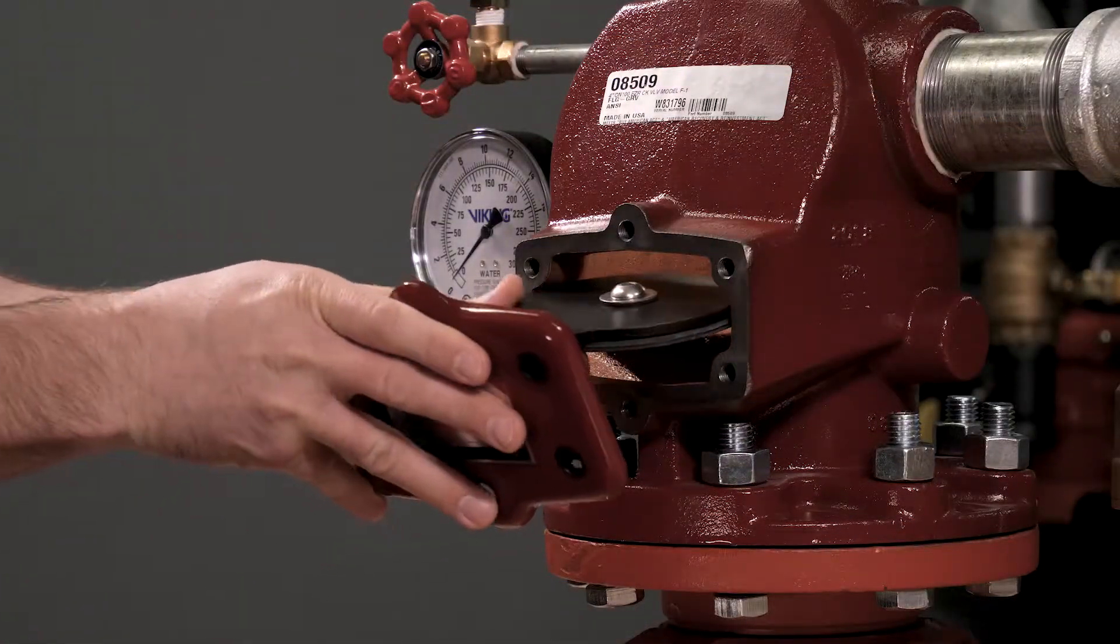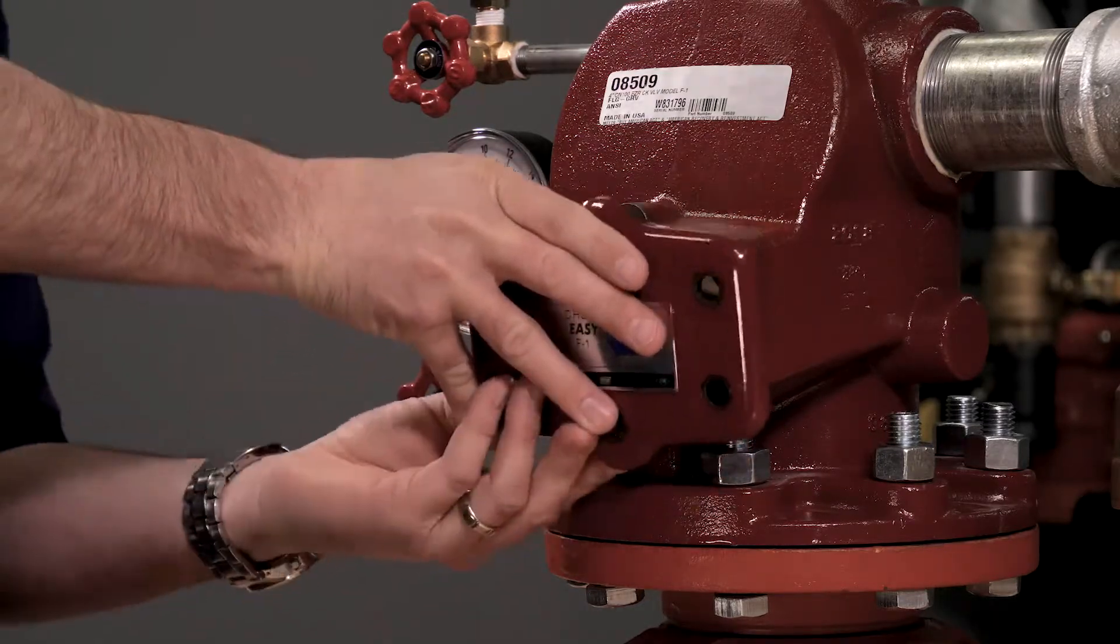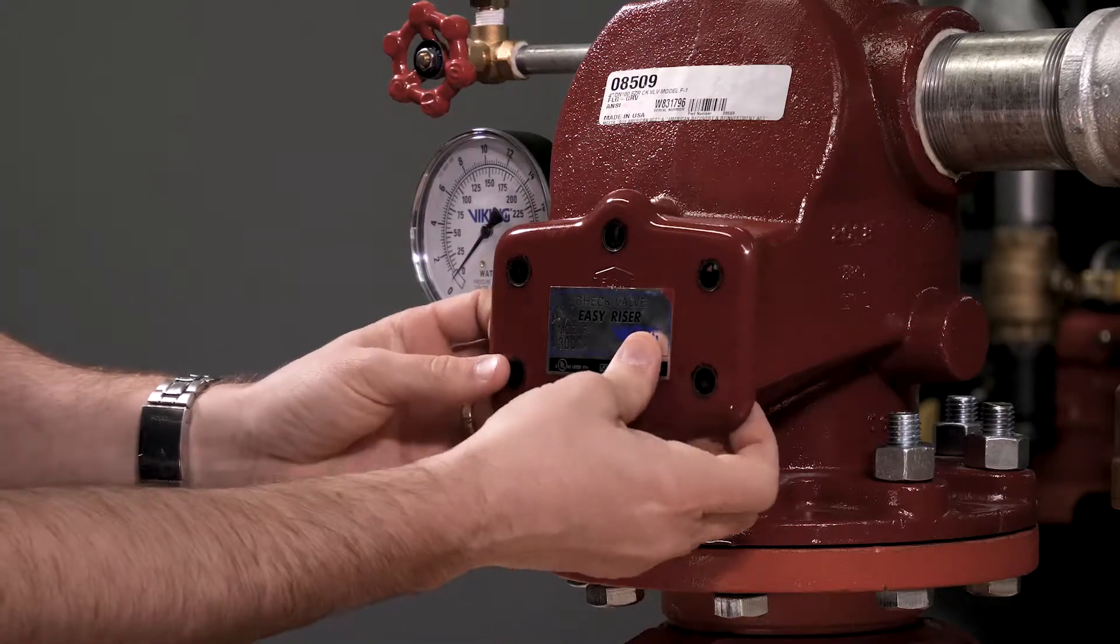Now we can install the new clapper assembly into the body of the valve. Make sure that the clapper rubber lines up with the seat inside the valve.